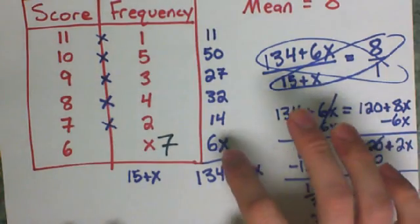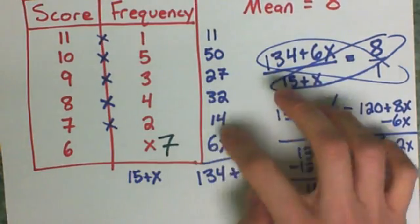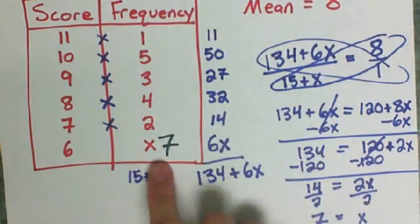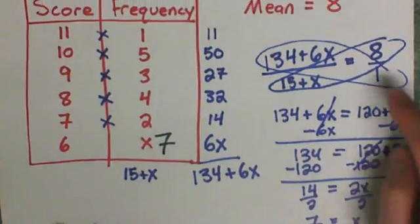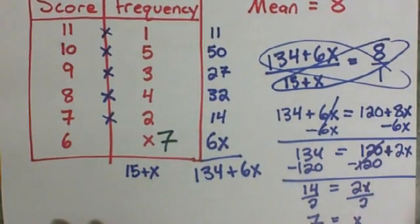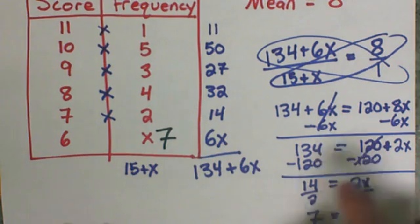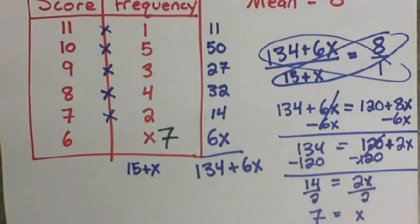And then if I redid the problem using the actual numbers, putting a 42 here and adding these up, and putting a 7 here, that would be 22. It should still get the correct mean of 8. So notice we solve it with the x just like we usually would.